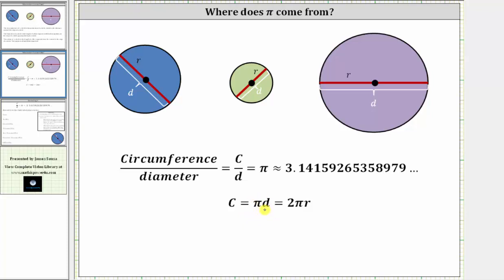And because the diameter is equal to two times the radius, or two times r, we often see the circumference of a circle expressed as two pi r, which is two times pi times the radius. Thank you for watching.